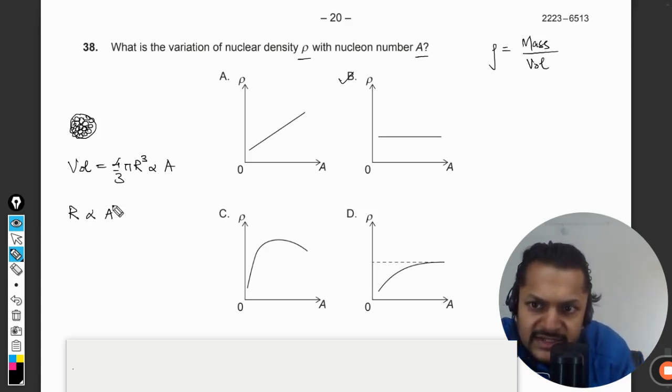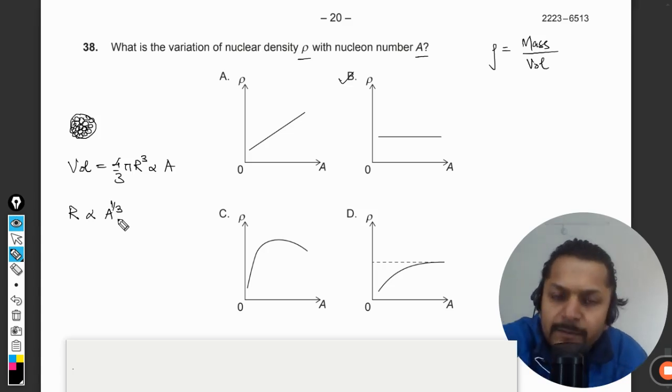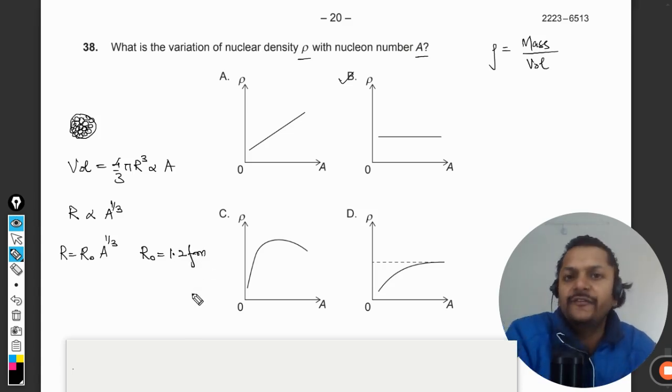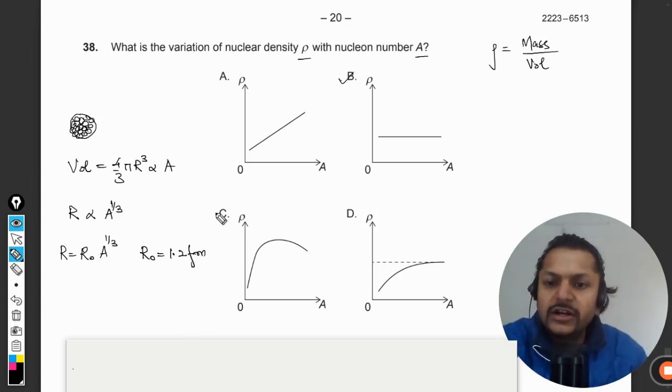From here we can clearly say that the radius is directly proportional to A^(1/3). From there we create a formula: r = r₀A^(1/3), where r₀ is given by 1.2 fermi meter, and fermi stands for 10^(-15) meters. So this is r₀ here.